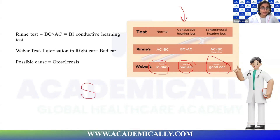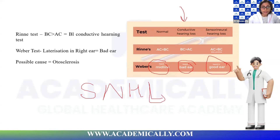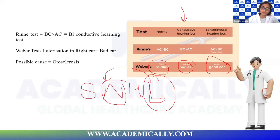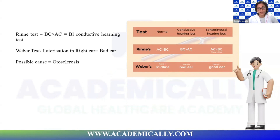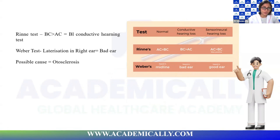To remember Weber's lateralization: in sensorineural hearing loss, Weber lateralizes towards the normal or good ear. So in conductive hearing loss, it will lateralize towards the bad ear. Frame your own mnemonic if needed — just make sure you have one, because you don't want to waste time on these questions in the exam. Now let's go back to the question.